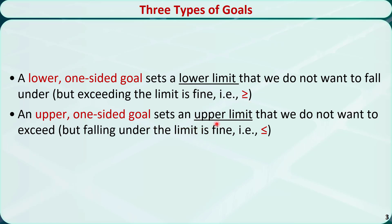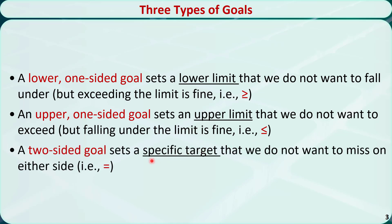An upper one-sided goal sets an upper limit that we do not want to exceed, but falling under the limit is fine. This corresponds to a less than or equal to constraint. A two-sided goal sets a specific target that we do not want to miss on either side. This corresponds to an equality constraint.